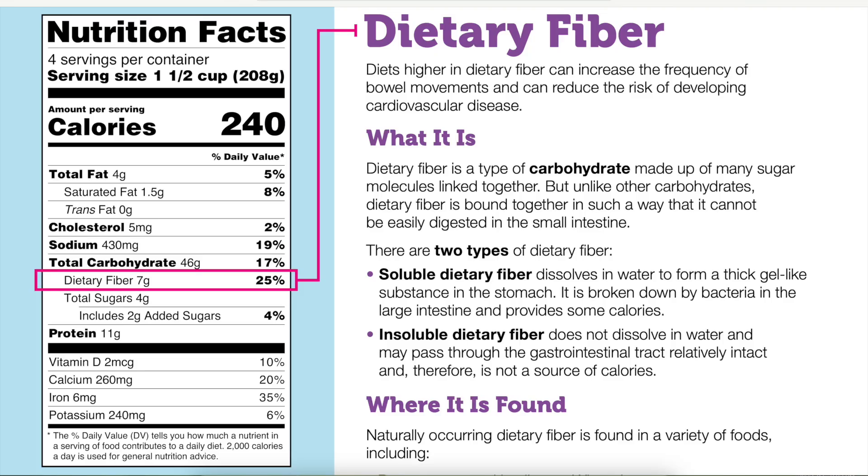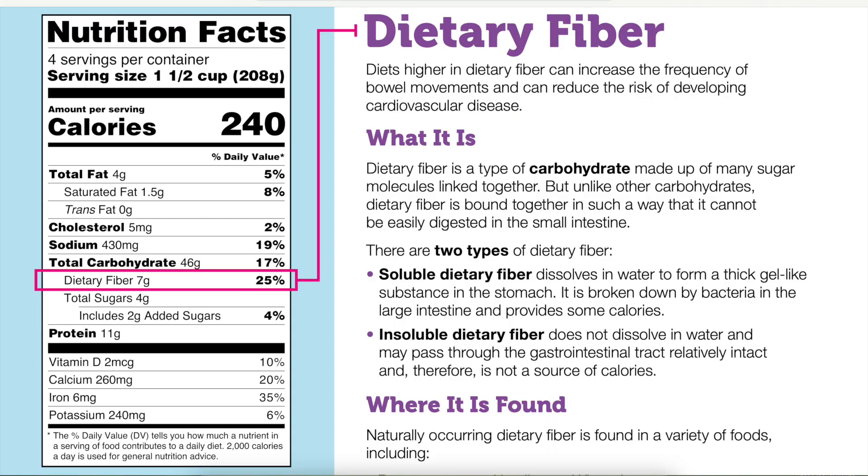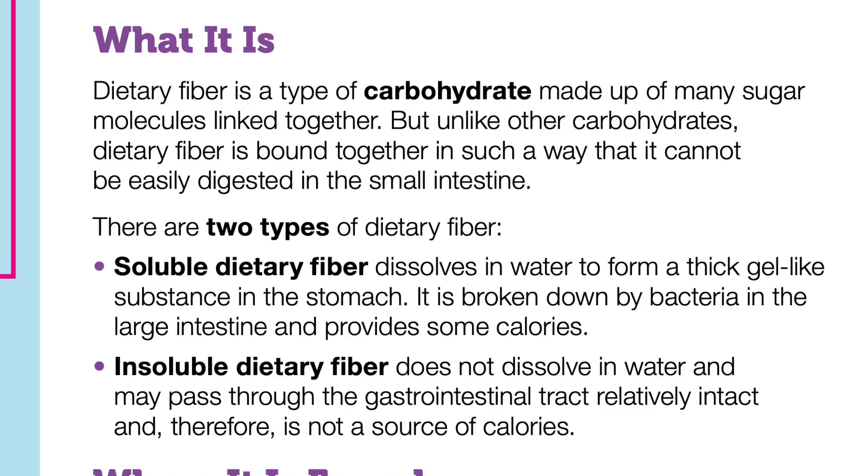I could understand why the American Diabetes Association does not recognize net carbs, because to get a truly accurate number for net carbs, we need to know the amount of soluble and insoluble fiber in a product. The FDA has a really nice handout about dietary fiber. On most labels, just dietary fiber is listed. Dietary fiber is of two kinds — either soluble fiber or insoluble fiber.